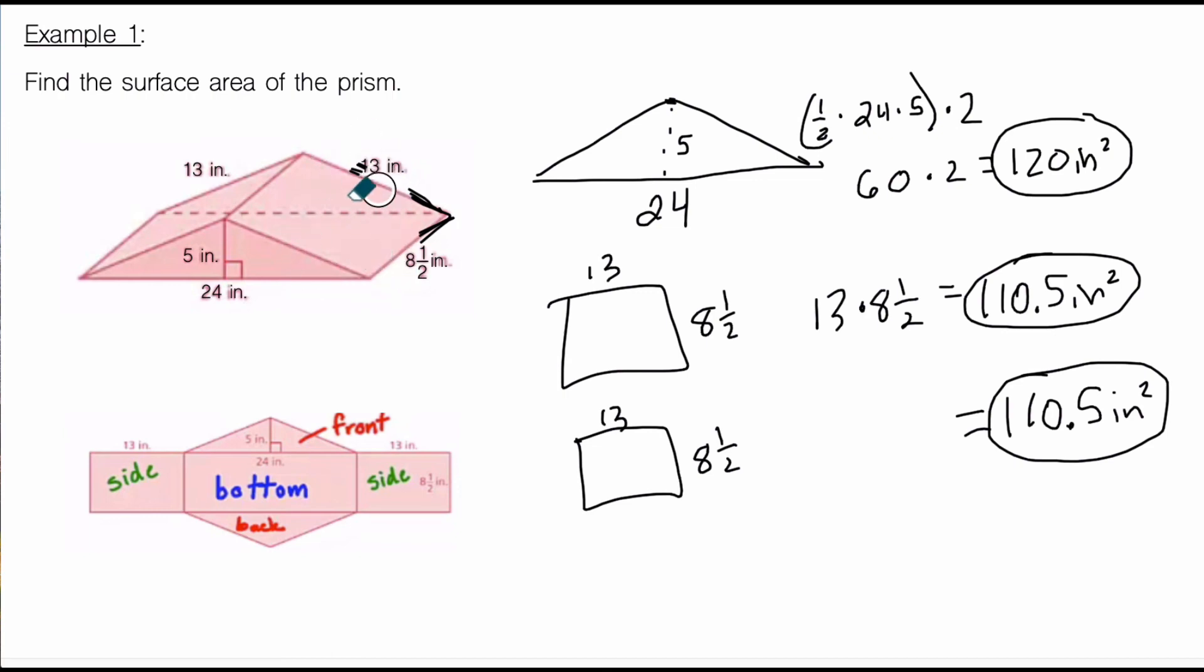And then the last rectangle that we're going to find is on the bottom here. And this rectangle, a little bit bigger, it's 24 inches by 8 and a half. 24 by 8 and a half, and that, 24 times 8 and 1 half, if you use a calculator, it ends up being 204 even inches squared.